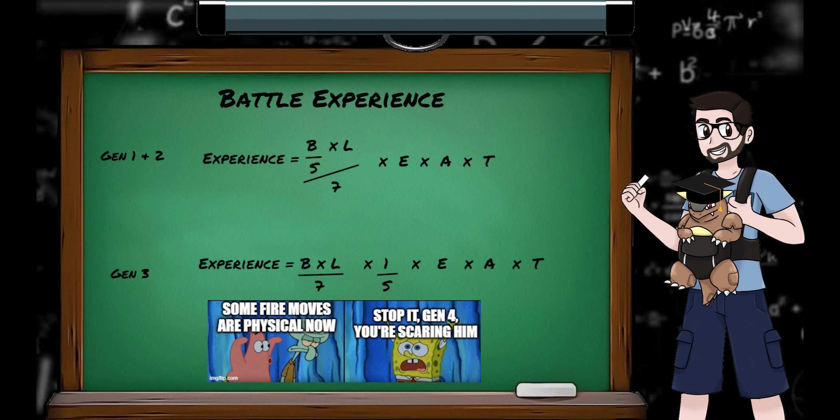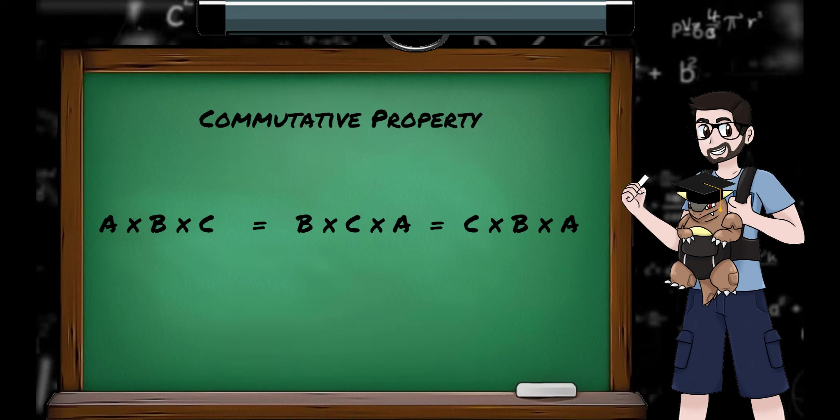Now at this point you may be saying, but these equations are the same. Maths teaches us that A times B times C is the same as C times B times A, or A times C times B. So why have I made this distinction?